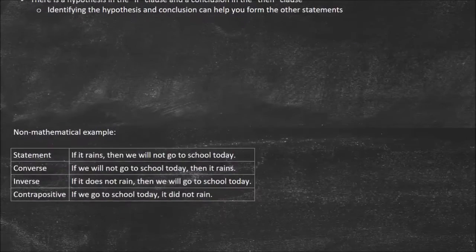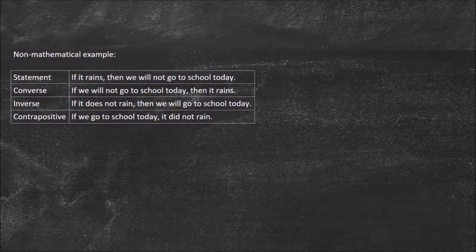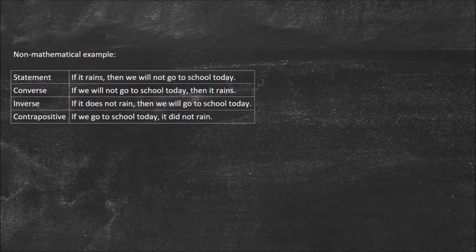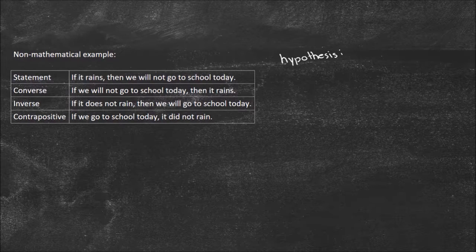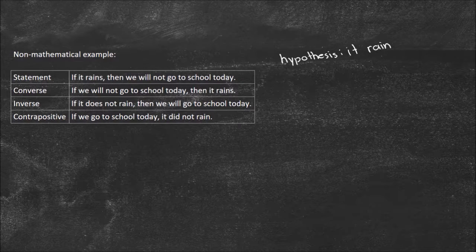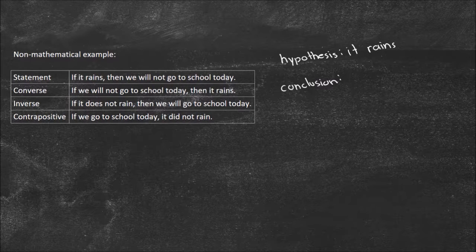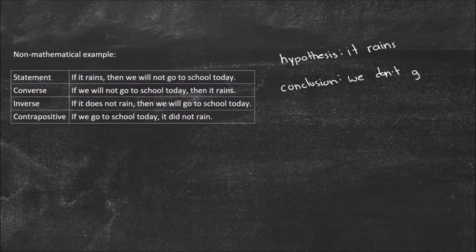The best way to think about this is to look at an example. This is a non-mathematical example, just to get you used to seeing this form. Remember, it says if P, then Q. The first thing I want to do is identify the hypothesis, and that's going to be what comes right after 'if.' So: if it rains. The hypothesis is 'it rains.' And then we're saying, if it rains, the conclusion is school gets canceled — we don't go to school. That's the conclusion.